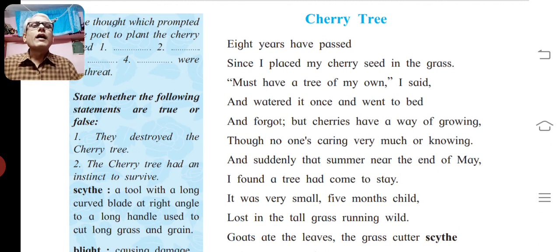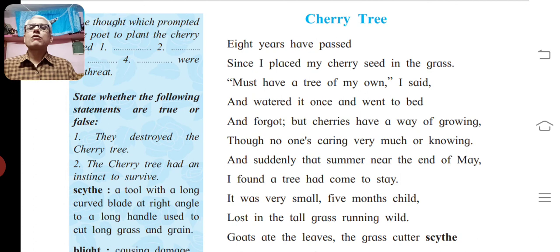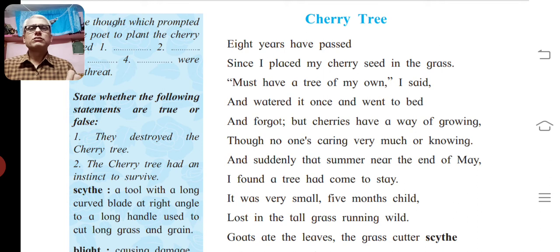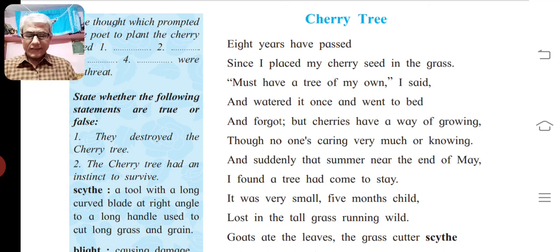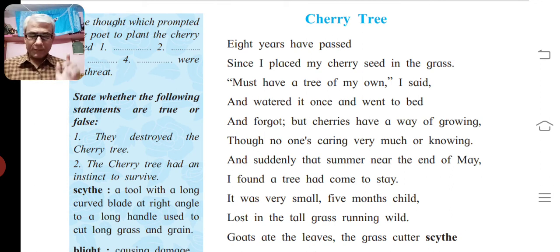See the fourth line: 'And watered it once and went to bed.' Here the figure of speech is again alliteration — the sound of W is repeated pleasingly. Next line: 'And suddenly that summer near the end of May.' The figure of speech used here is also alliteration — the sound of S is repeated pleasingly.